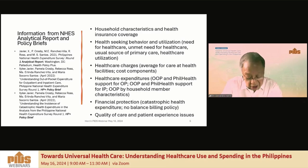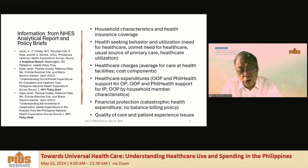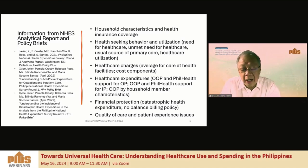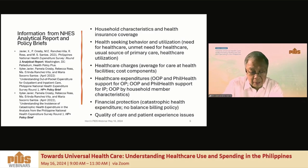The initial analysis and reports using NHES were provided by the HP Policy Plus Group, headed by Saile Javier, Rebecca Ross, and their associates. They produced the analytic report as well as two policy briefs: one on outpatient care, and the other on catastrophic expenditures. The content of the analysis includes user characteristics, household characteristics, health-seeking behavior and utilization, healthcare charges, health expenditures, financial protection — where catastrophic expenditures come in — and quality of healthcare and patient experience.